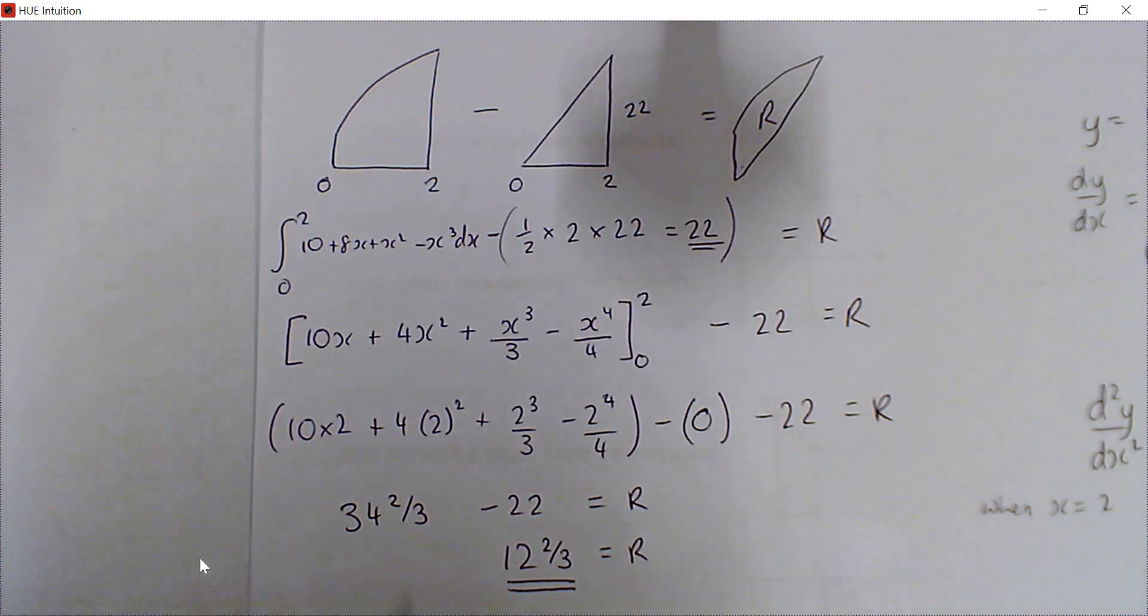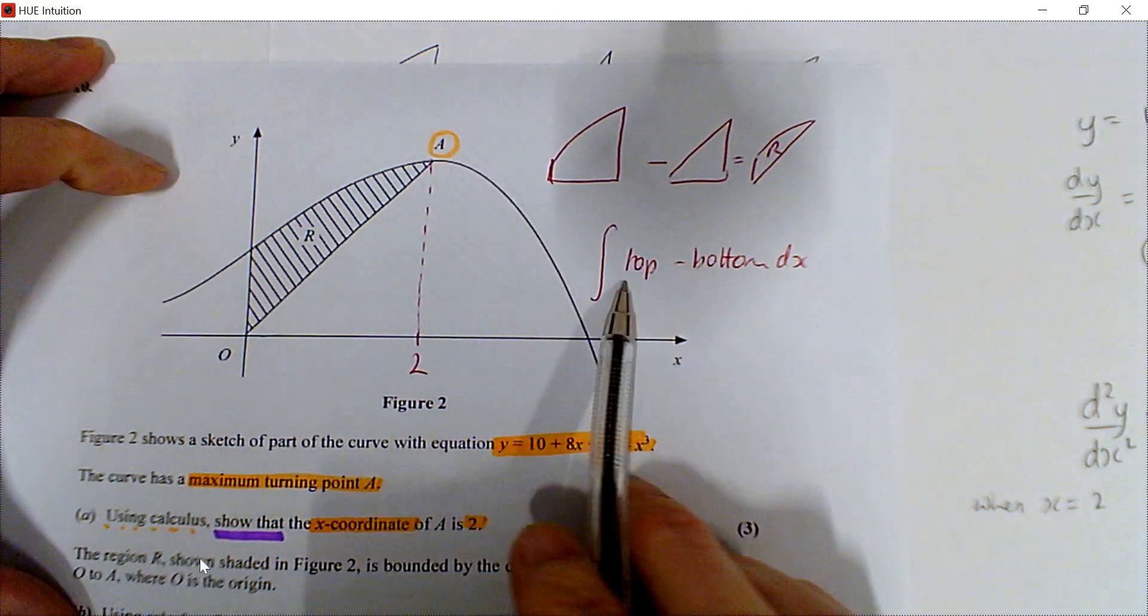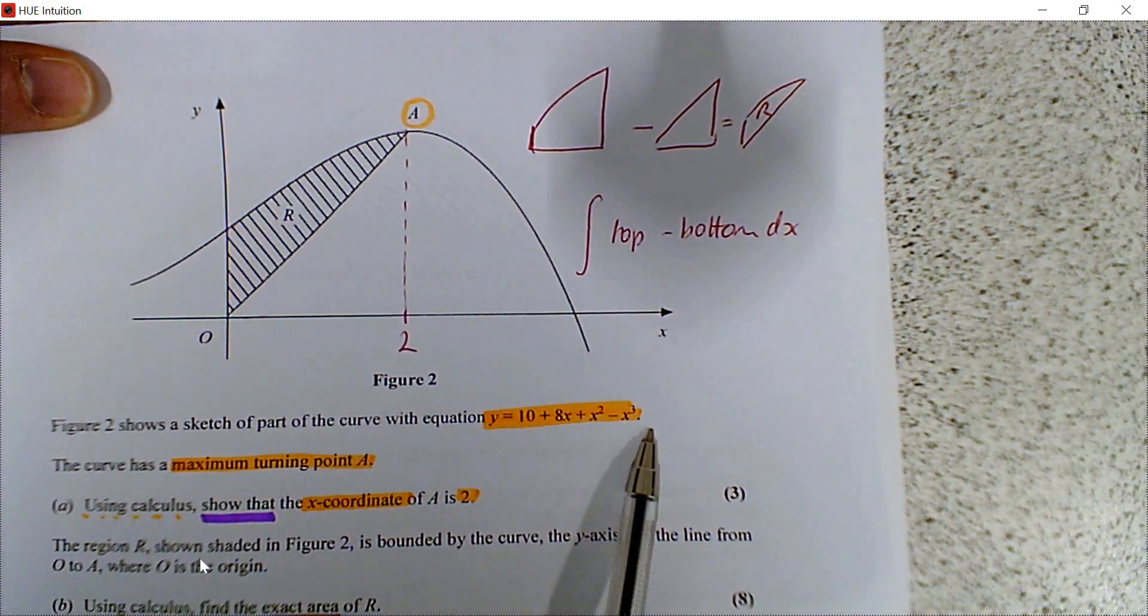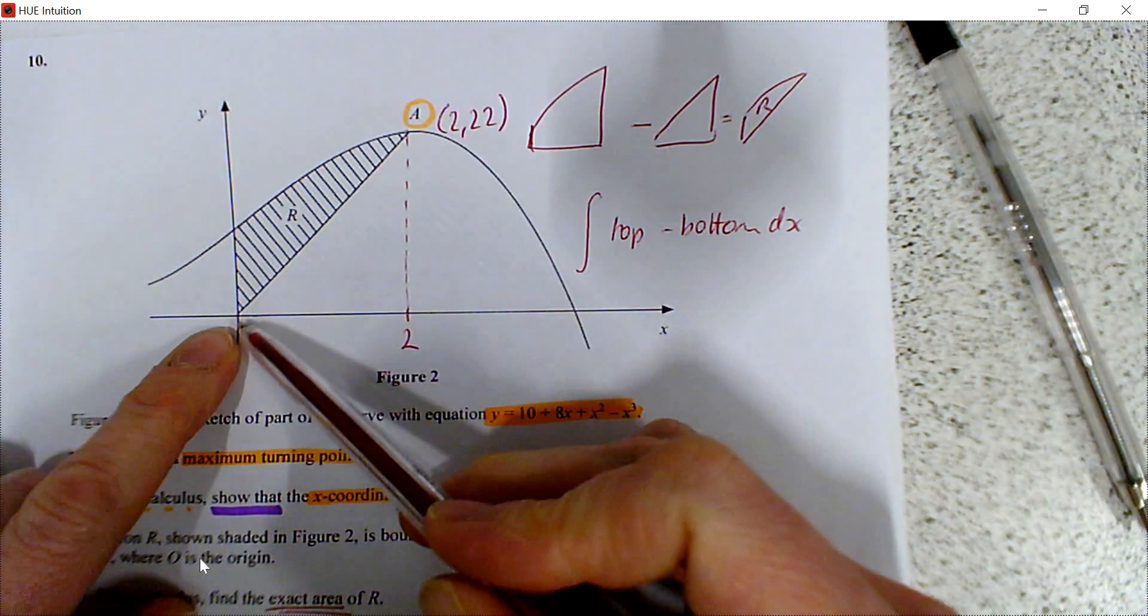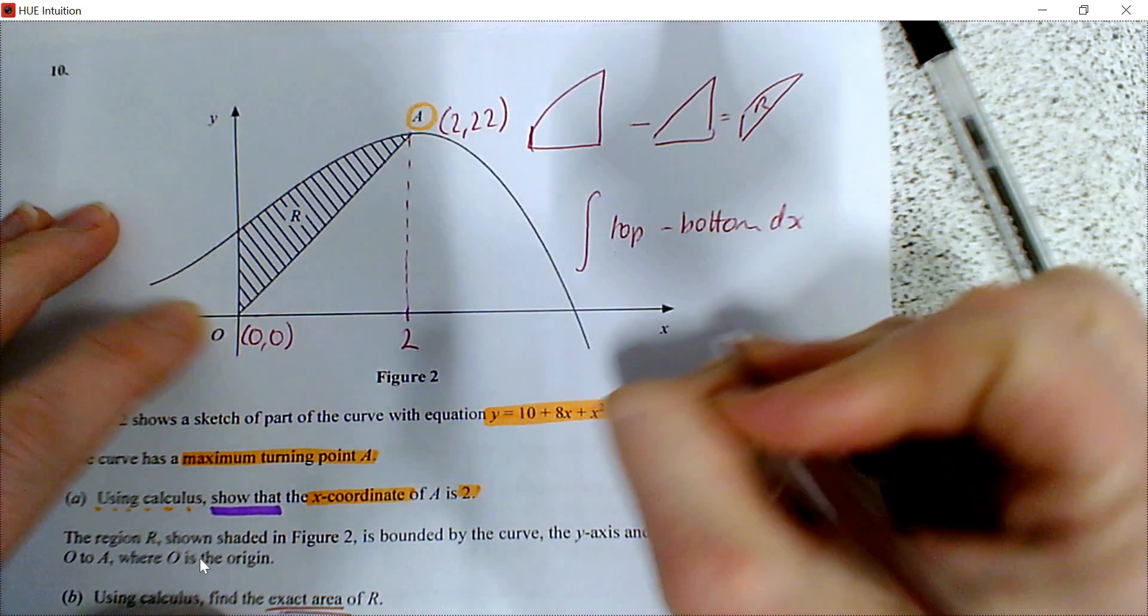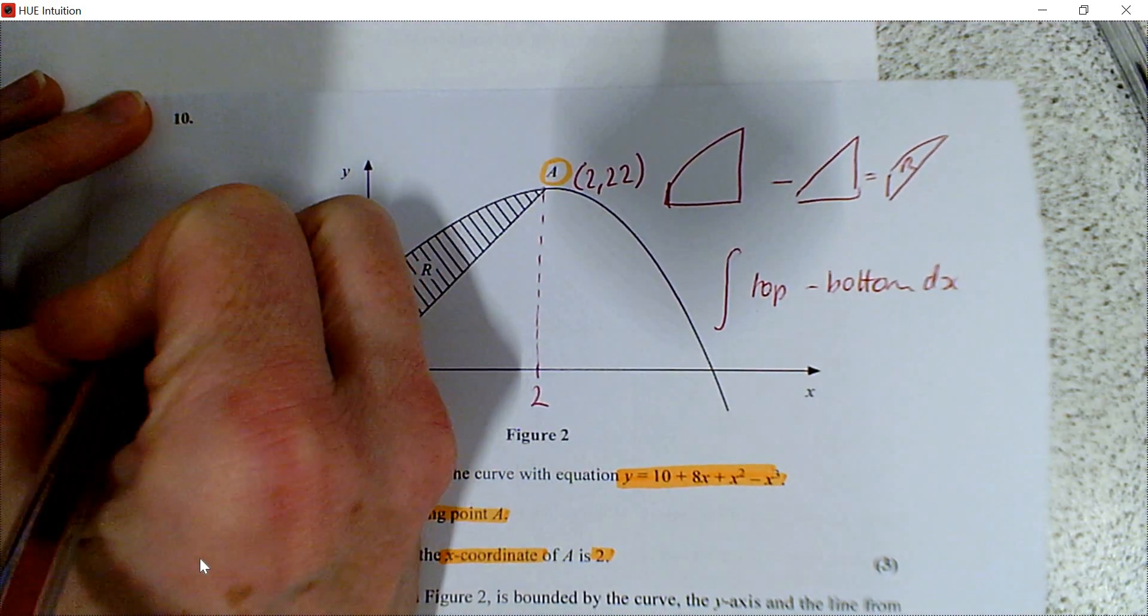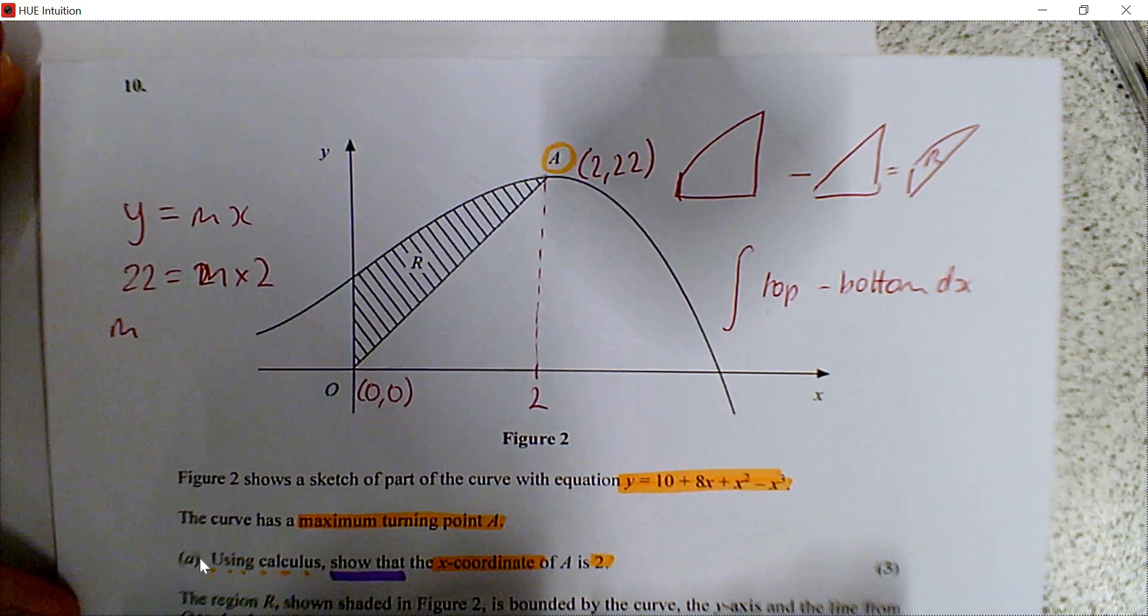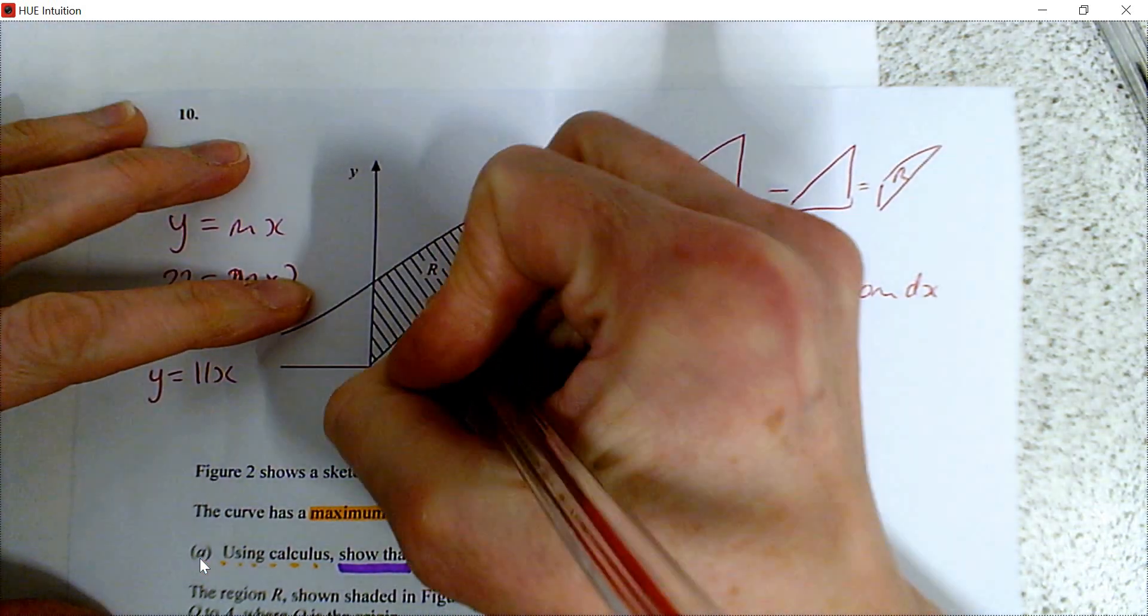So I did say that I would do it as well if we're going to do the top curve take away the bottom curve. Let's look at doing that strategy. I know that my top curve is the cubic, but my bottom curve, what would that be? We know now that this point is 2, 22. So we want to know a line that goes through 0, 0 and 2, 22. So it's going to be y equals mx. Let's put the 2 and 22 in there. 22 equals 2m times 2. So m has got to be 11. Now I've got my curve, y equals 11x.